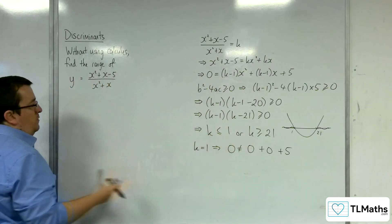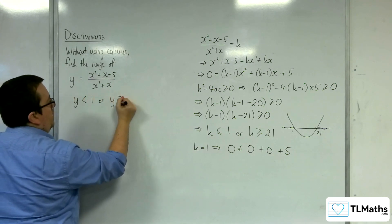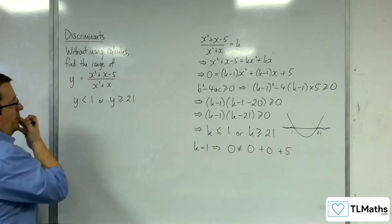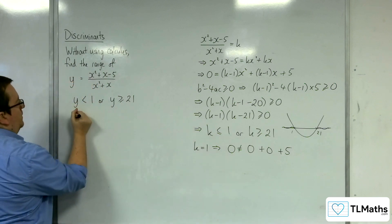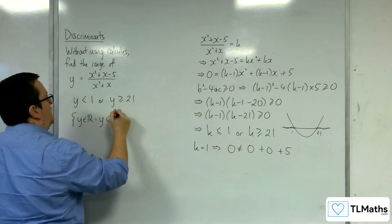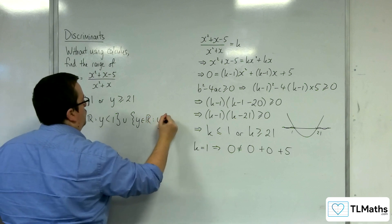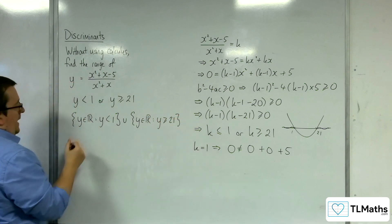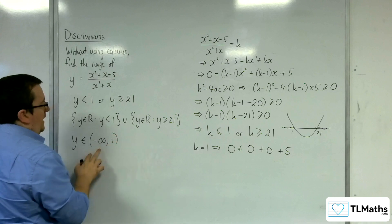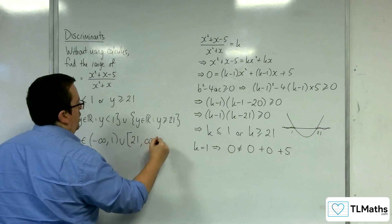So, this isn't quite right. What the range should be, actually, is y is less than 1, or y is greater than or equal to 21 — we can't include the 1. So, that is my range. In set notation: y belongs to the real numbers such that y is less than 1, union y belongs to the real numbers such that y is greater than or equal to 21. And in interval notation: y belongs to minus infinity up to 1 in curved brackets, because we're not including it, union square bracket 21 comma infinity curved bracket.